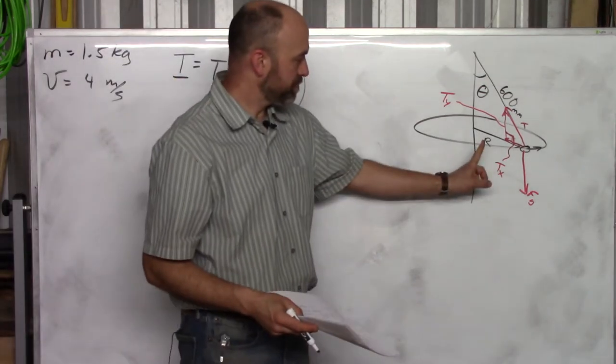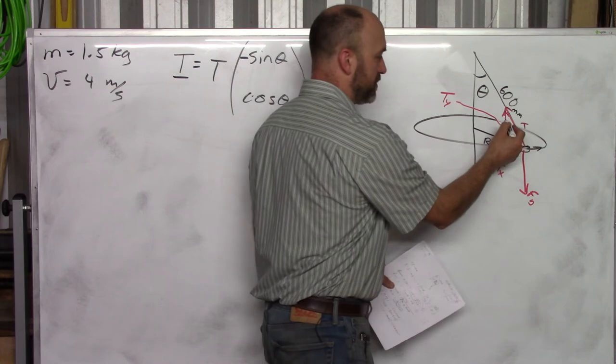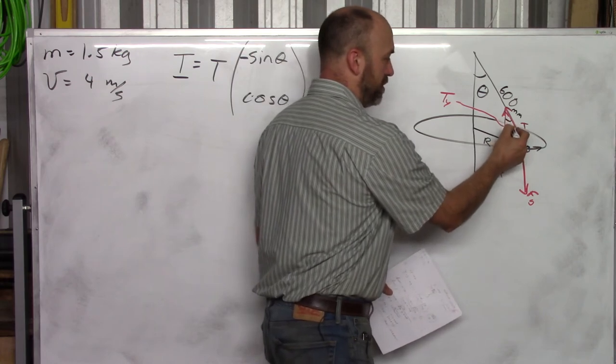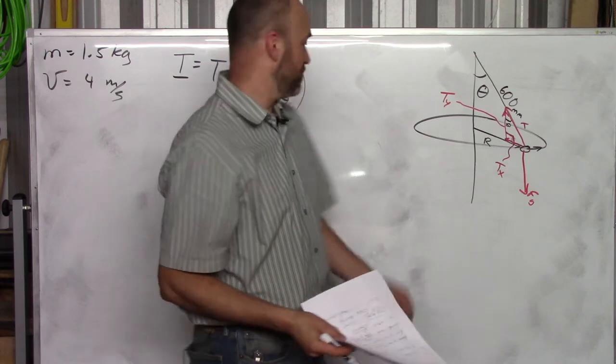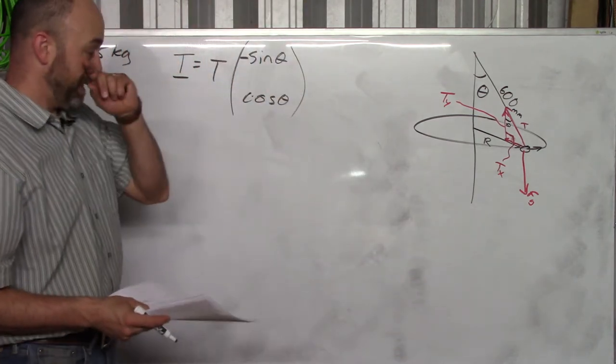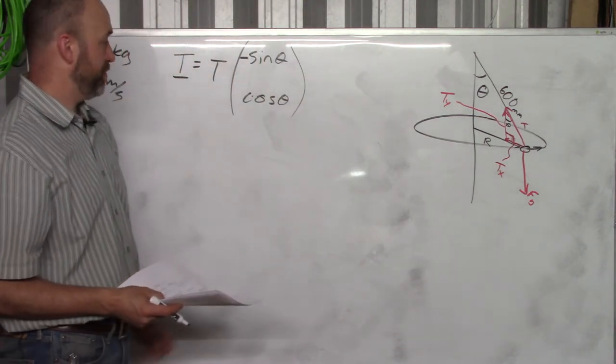Notice this angle up here is the same as this angle here. If you wanted to call theta the angle at the bottom, that's fine. You'll just have to flip your sines and cosines. But there you go. That's it. So that's T.